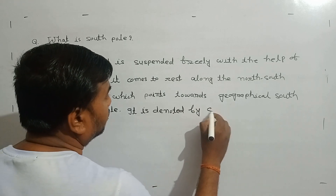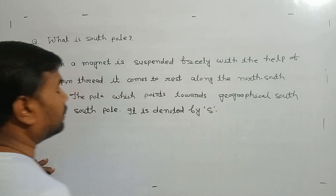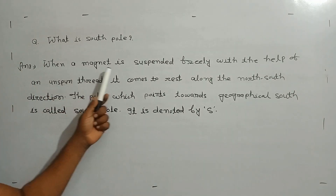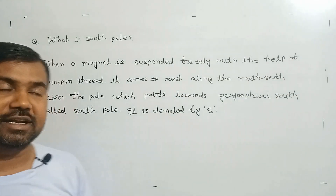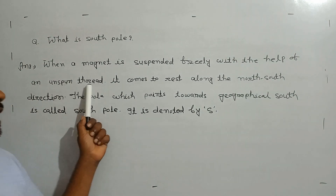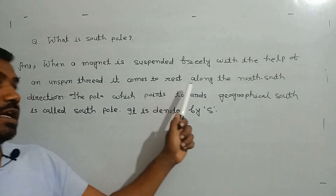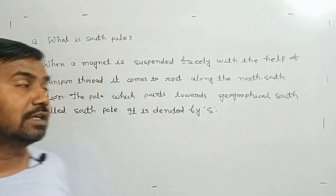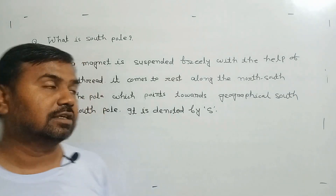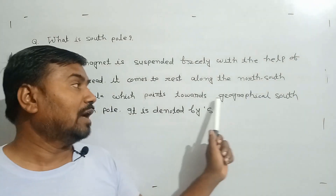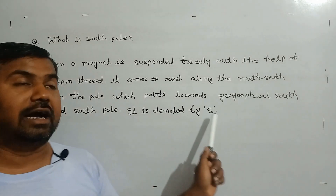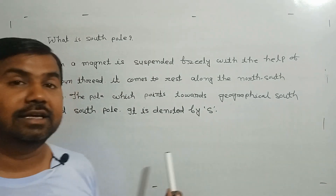It is denoted by S. The definition of South Pole: when a magnet is suspended freely, the pole which points towards geographical south is called South Pole. It is denoted by S.